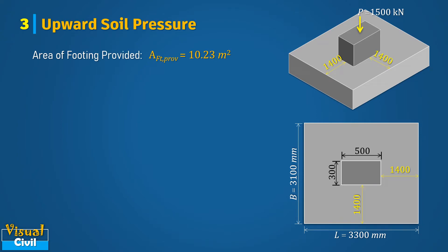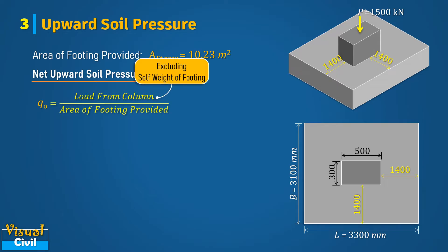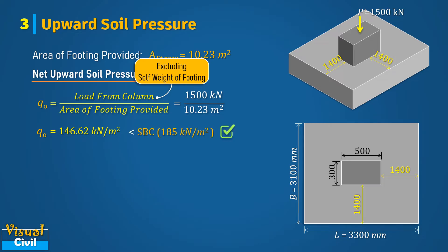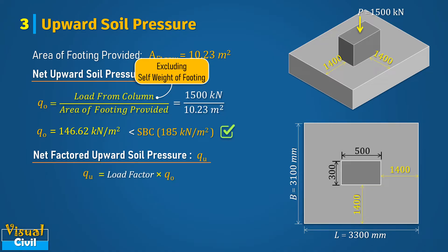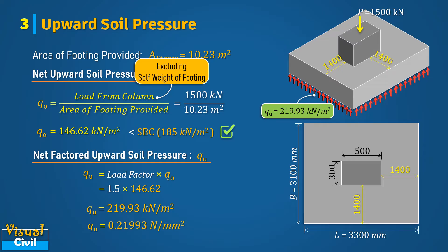In the next step, calculate the net upward soil pressure by dividing the load from column with area of footing provided. After solving, we get the net upward soil pressure equal to 146.62 kilonewton per meter square. This should be less than the SBC of soil. Next, compute the factored net upward pressure qu by multiplying the net upward pressure with the load factor. Considering the load factor equal to 1.5, after solving we get the factored soil pressure equal to 0.21993 Newton per mm square.